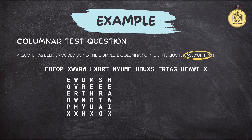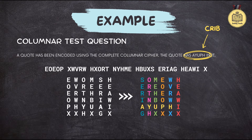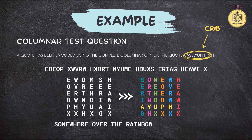And that's where the crib comes in. The crib is like your key to unlocking the whole puzzle — you use it to figure out how the columns should be rearranged. Like finding those corner pieces in a jigsaw puzzle, suddenly things start to fall into place. It's all about finding that pattern. Once you have the columns in the right order, the rest is easy: you just read across row by row, and the hidden message reveals itself.